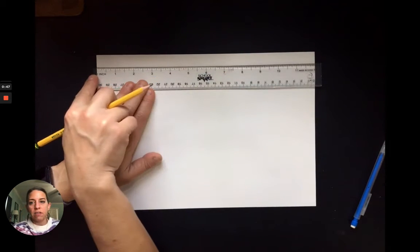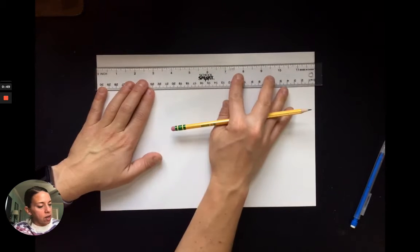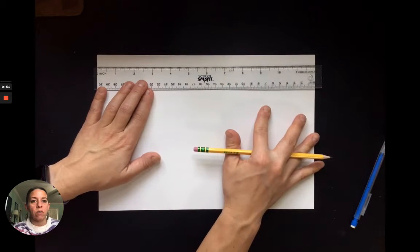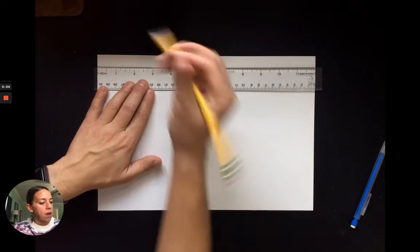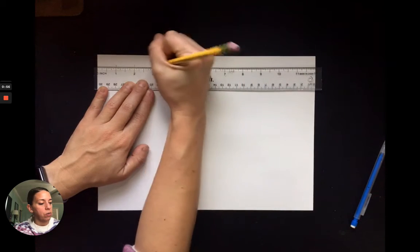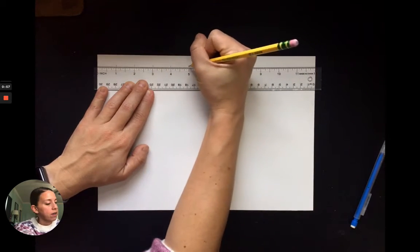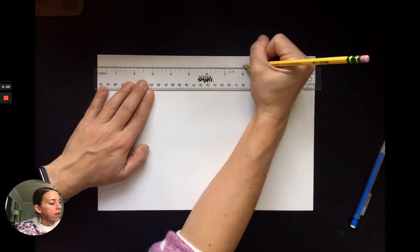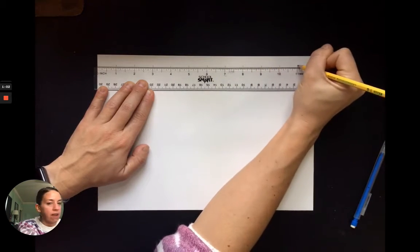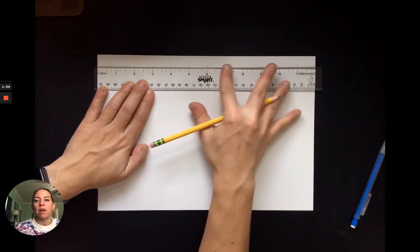So we're going to find that zero mark on our ruler and we're going to line our edge up and I have my paper horizontal right now, landscape, and my ruler is nice and straight. I'm going to go ahead and measure one, two, three, four, five, six, seven, eight, nine, ten, eleven. Our paper is 12 inches long, so we need eleven marks.